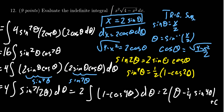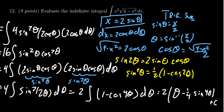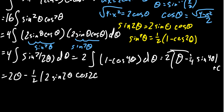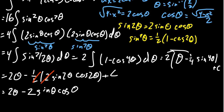Now we need to translate back from theta to x, but our identities are in terms of theta, not 4 theta. Applying the double angle identity one more time, we distribute the 2 to get 2 theta minus one half times (2 sine of 2 theta cosine of 2 theta) plus a constant. The one half cancels with the 2, and applying the double angle for sine once more gives 2 theta minus 2 sine theta cosine theta plus a constant — now it's in terms of theta.